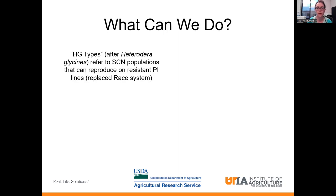So what can we do about this problem? Let me explain a little bit about what our current system looks like. You might hear several different terms. One is called HG types, and that's just a fancy way of saying Heterodera glycines, which is the genus species name of this nematode. These HG types refer to soybean cyst nematode populations that can reproduce on our resistant lines — those PI lines that I just mentioned a few slides ago. This system replaced the old race system.